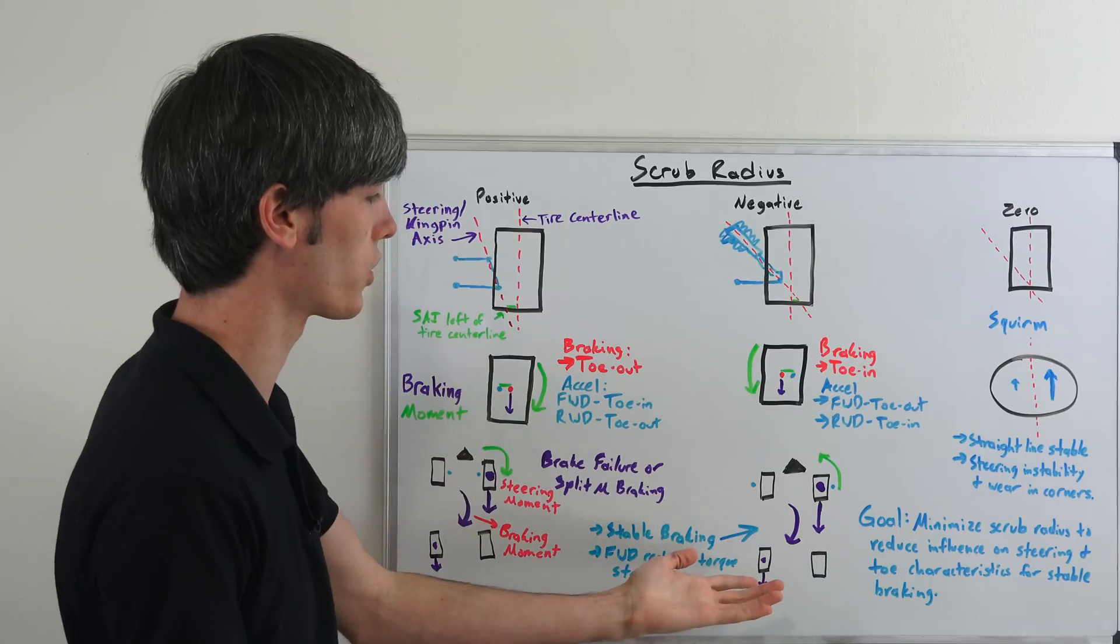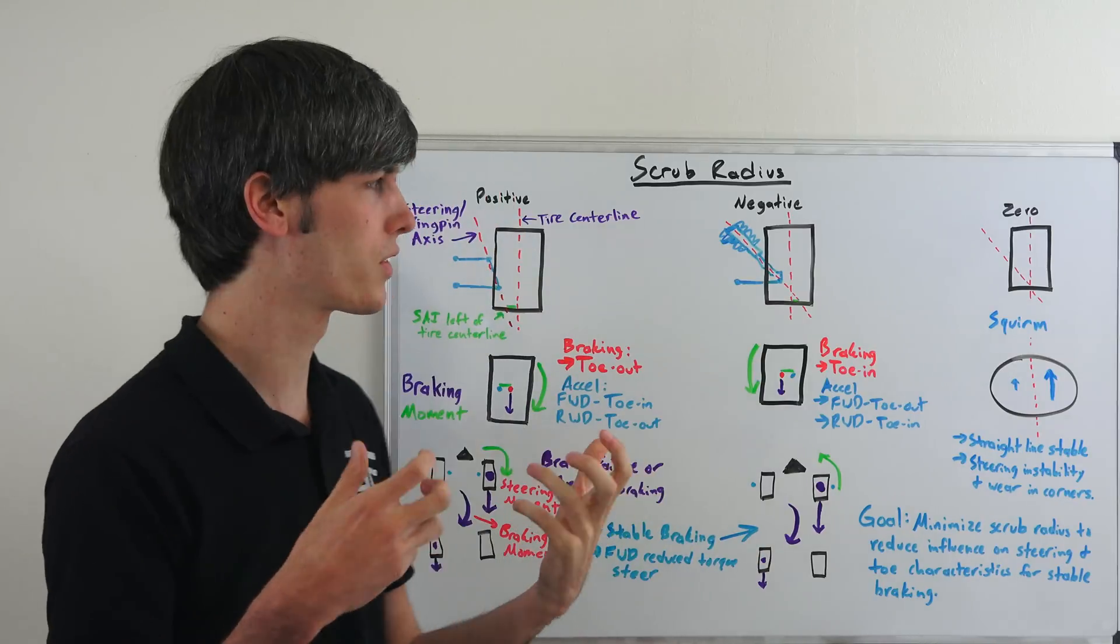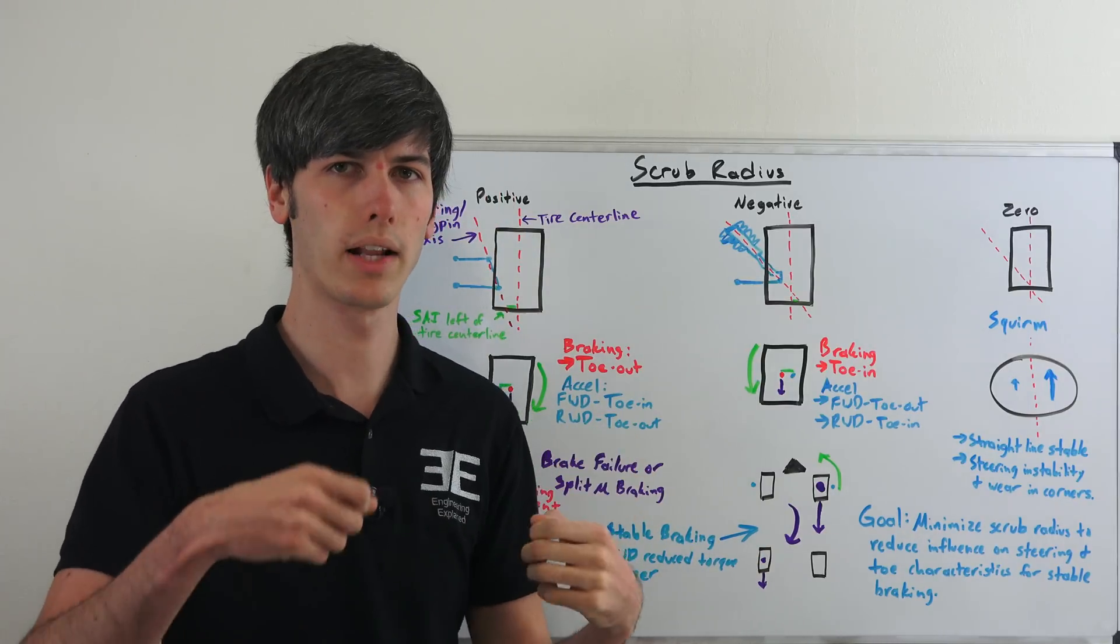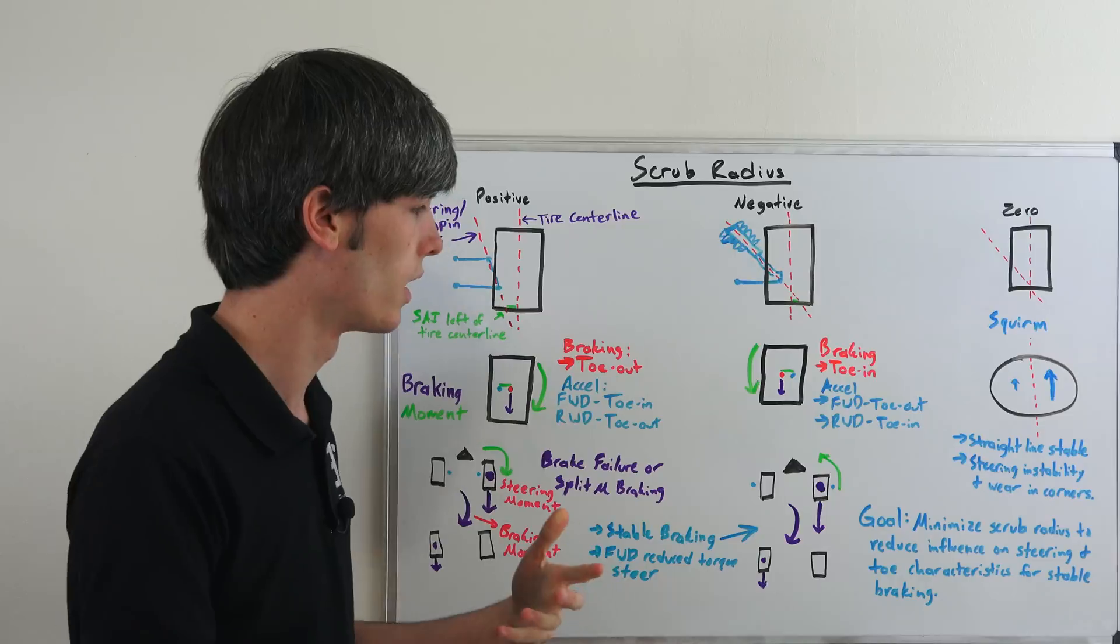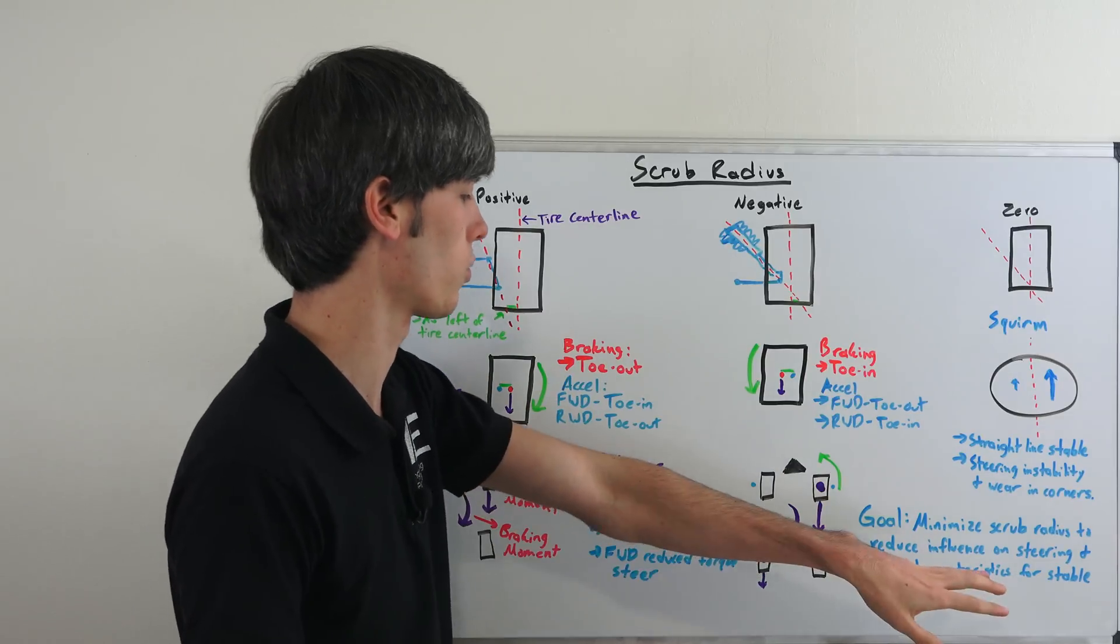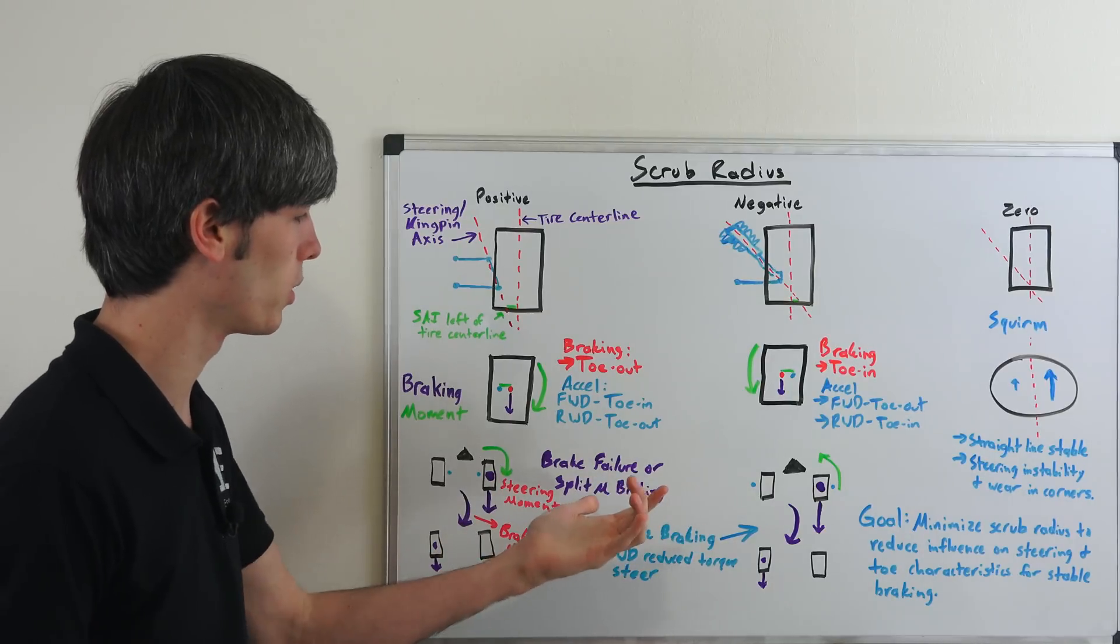But you don't want to have a ton of steering influence based on what's happening, so if you're accelerating you don't want to have a lot because it's going to want to change the wheel or if you're braking really heavily you don't want to have a lot because it's going to change the steering wheel. And so the other example I was talking about, split mu braking...